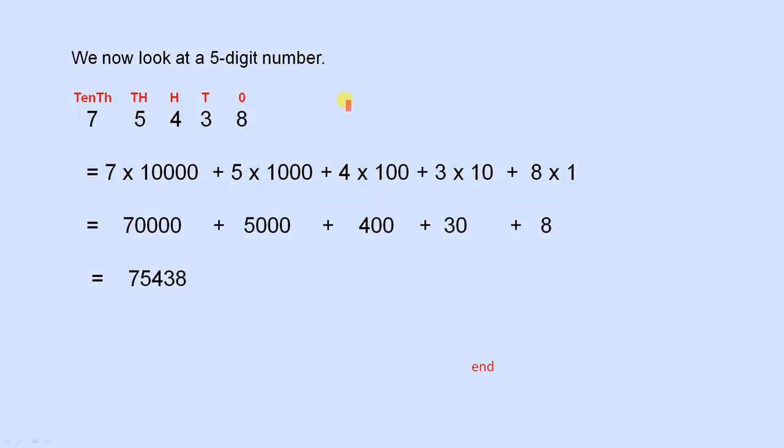We now look at a 5 digit number. 75,438. So we have the ones column, the tens column, the hundreds column, the thousands column, and the ten thousands column.